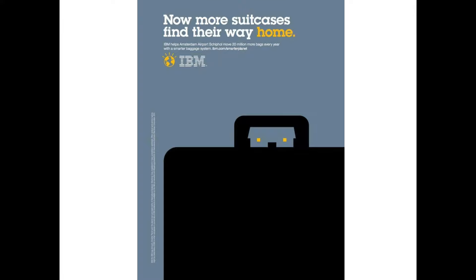I've included some examples you might find not in a gallery, but on a billboard or in a magazine or in an Instagram advertisement. Starting with a fascinating ad series by IBM that says 'Now more suitcases find their way home.' In this image of a suitcase, there's an image of a house that exists in the negative space of the handle — a super smart way of merging the ideas of suitcases and being home, and giving a shout out to Amsterdam airport moving baggage utilizing IBM.